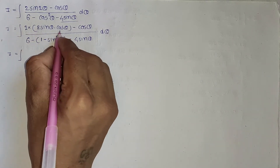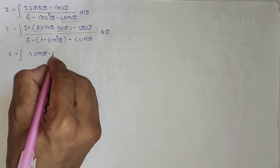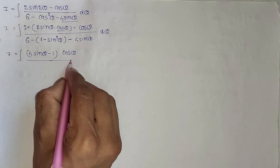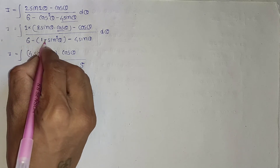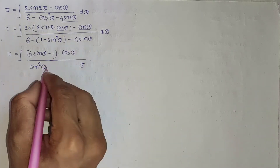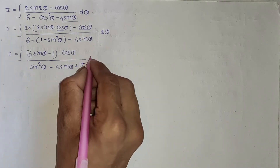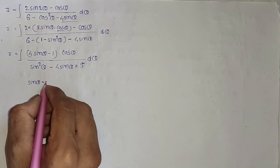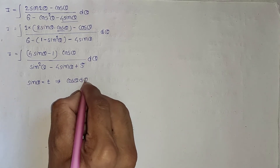Now I equal to integration of 4 times sine theta minus 1, times cos theta — taking cos theta common from the numerator — divided by 6 minus 1 is 5, and minus times minus is plus, so plus sine squared theta minus 4 sine theta plus 5, d theta.